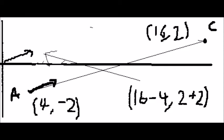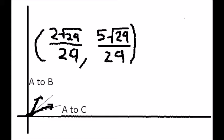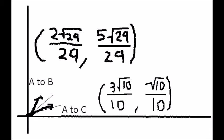And the vector from A to C becomes (12, 4). The unit vectors are (2√29/29, 5√29/29) and (3√10/10, √10/10).